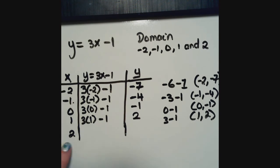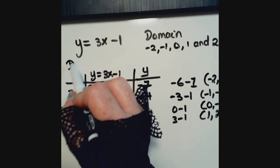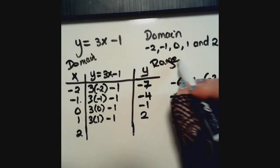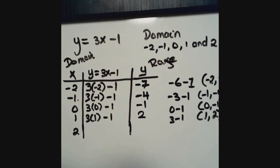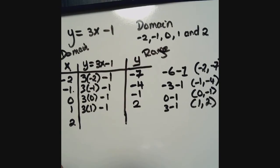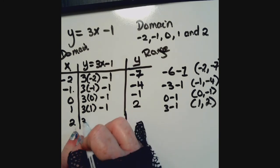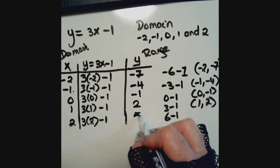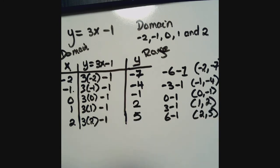Note: the domain is always the x values, and the range is always the y values. For the last value, x equals 2: 3 times 2 is 6, minus 1 equals 5. So the final ordered pair is (2, 5). Now we'll take all five ordered pairs and graph them on the coordinate plane.